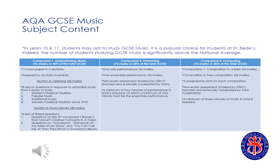For Component 2, pupils are required to submit two performances, including one solo and one ensemble piece, with a combined duration of at least four minutes. It is not essential that pupils can play an instrument before taking GCSE Music, but pupils will be expected to practise outside of lesson time.